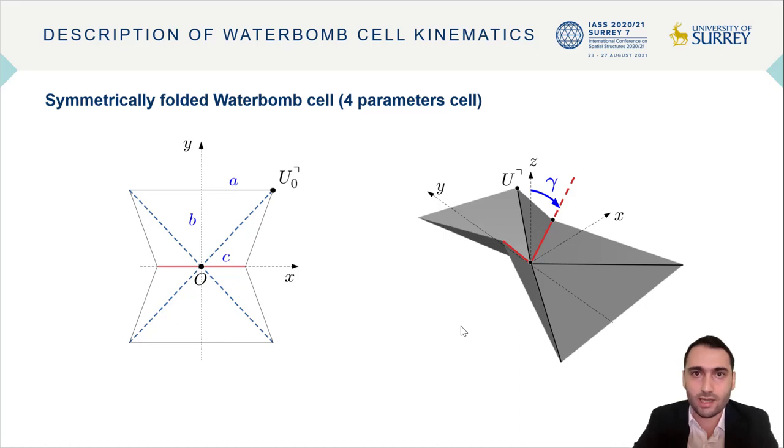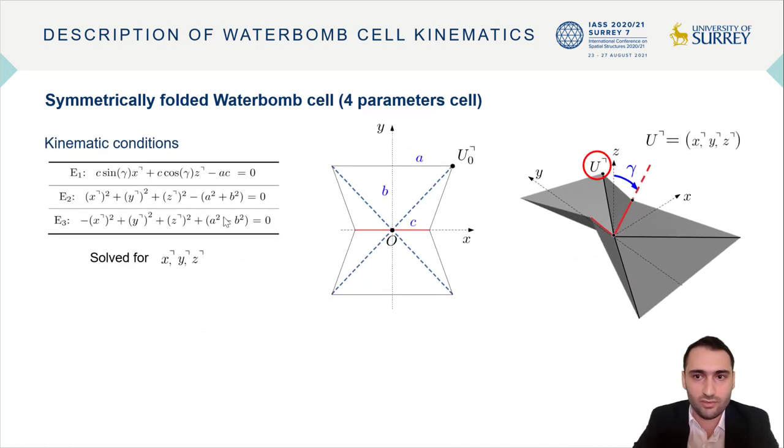Now to describe the kinematics algebraically, we construct these three kinematic conditions relating the coordinates of the upper right corner to the cell parameters. These conditions are obtained supposing a rigid material from the fact that folding lines as well as angles between folding lines remain constant during folding.